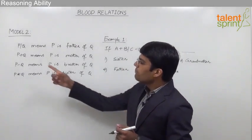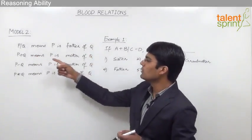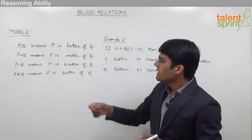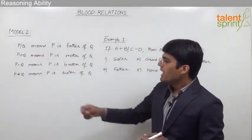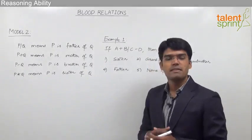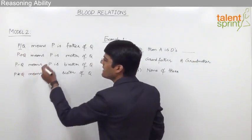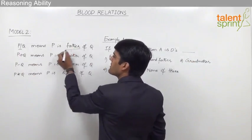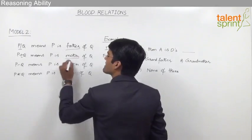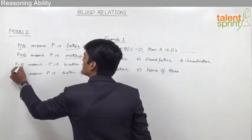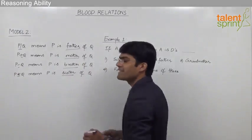The question here is: P divided by Q means P is father of Q; P plus Q means P is mother of Q; P minus Q means P is brother of Q; and P star Q means P is sister of Q. So, whenever we find a division symbol, that is taken as father; plus as mother; minus as brother; and star as sister.